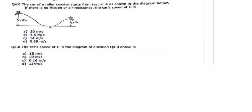So let us look into it. The question says: the car of Aurora Costa starts from rest at A, as shown in the diagram below. If there is no friction and no air resistance, the car's speed at B is — so we want to find the car's speed at point B.